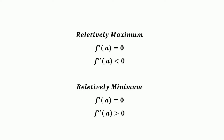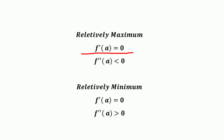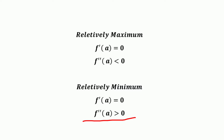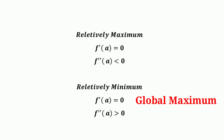So we have discussed the two conditions for a function being relatively maximum or minimum — the first order condition and the second order condition. A function is relatively maximum when f'(a) = 0 and f''(a) < 0. Similarly, a function is relatively minimum when f'(a) = 0 and f''(a) > 0. If the function is strictly concave over the interval, there will be only one maximum, known as the global maximum. If the function is strictly convex, there will be only one minimum, known as the global minimum.